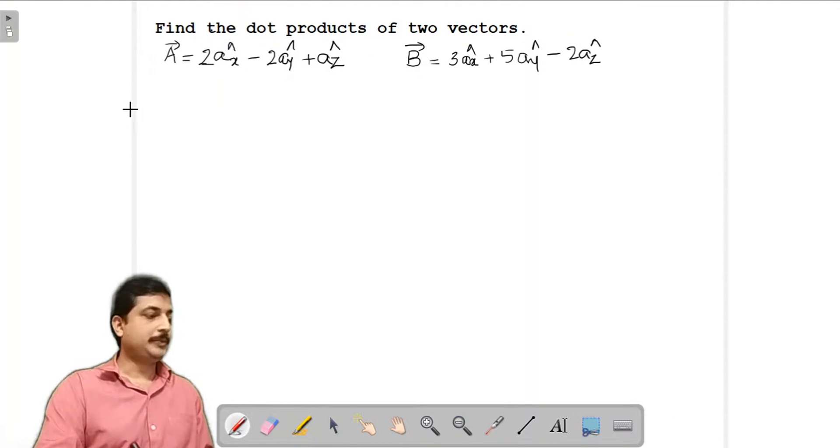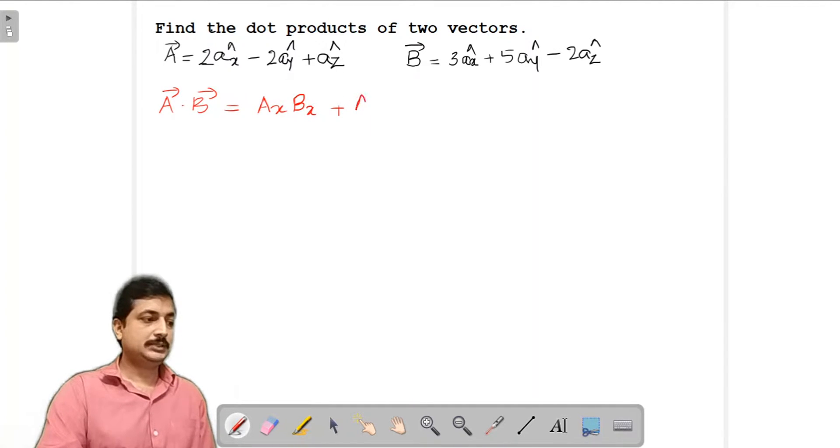From the definition of dot product, we know that two vector dot product, that is A vector dot B vector, is given as product of magnitudes of these two vectors. In my previous theoretical video this was well explained. So ax bx plus ay by plus az bz. You can directly make use of this formula.